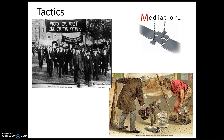If negotiation didn't work, unions focused on gaining members through a closed shop — meaning everyone in the factory had to belong to the union. Workers joining paid union dues, building a large bank account. The final tactic was going on strike: stopping work, walking the picket lines, and refusing to enter the factory.